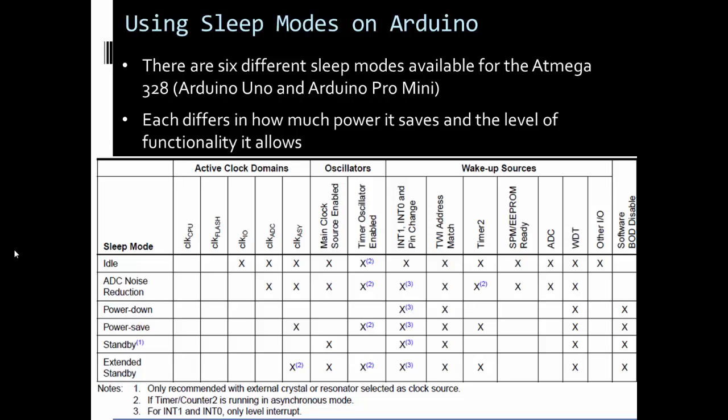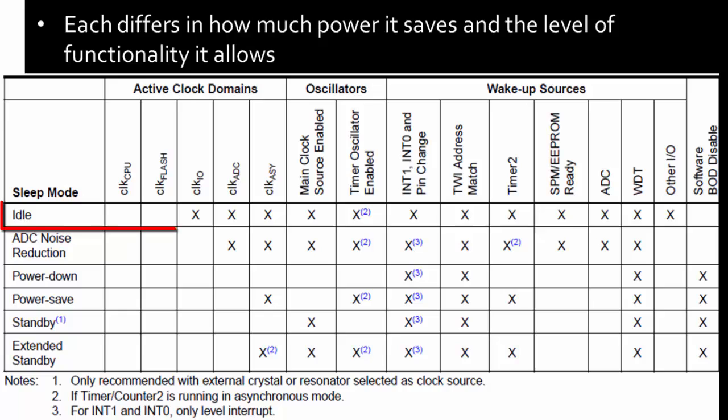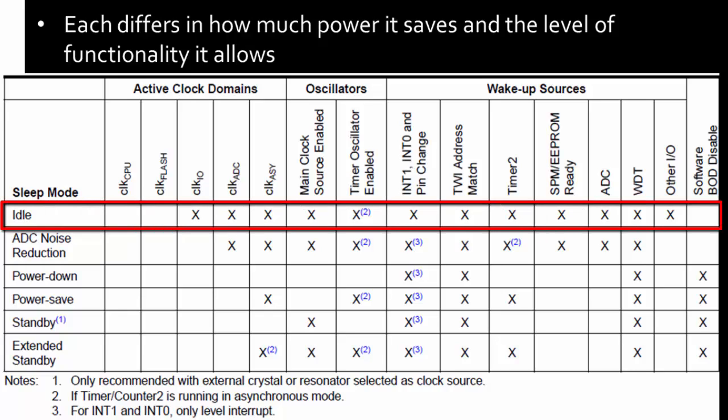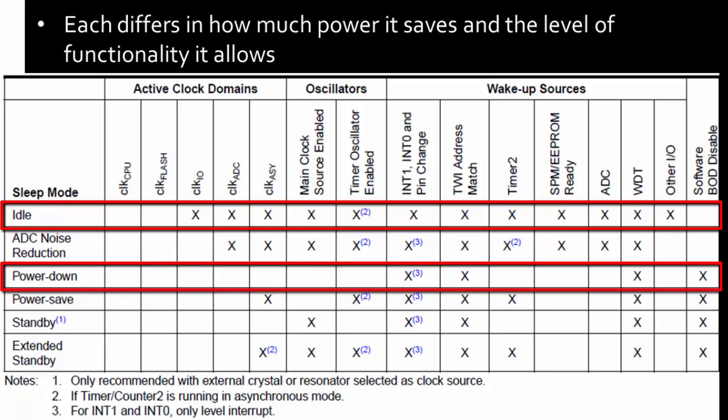There are six different sleep modes for the ATmega328P, which is the Arduino Uno and Arduino Pro Mini, and each of them differs in how much power you save and the functionality that they offer. So idle here at the top would be least power save, most functionality, and then power down would be the most power save, least functionality.